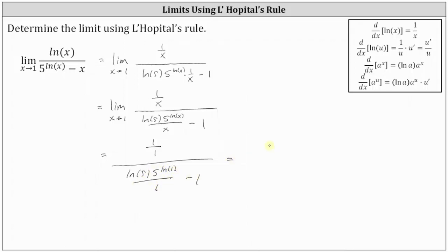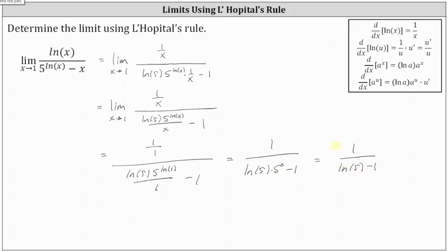Simplifying, we have one divided by natural log five times five to the power of zero, and then minus one, which gives us one divided by the difference of natural log five and one. Notice five to the zero is equal to one. So this is the exact value of the limit.